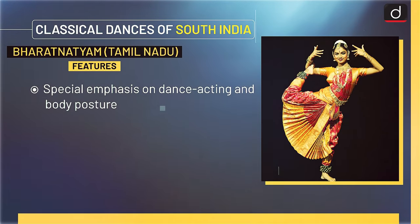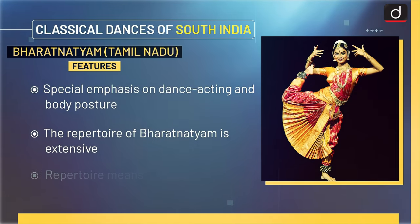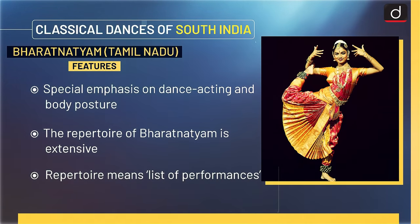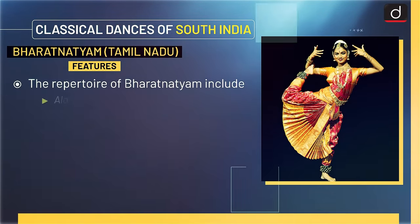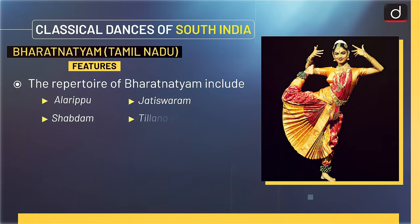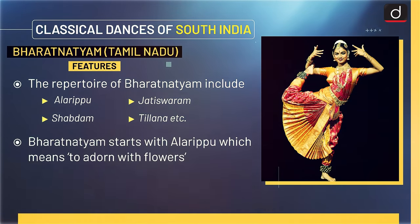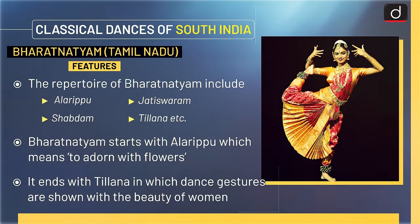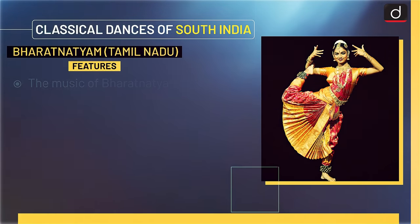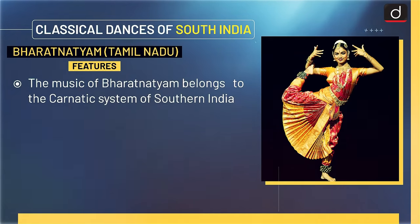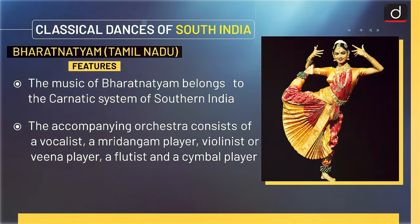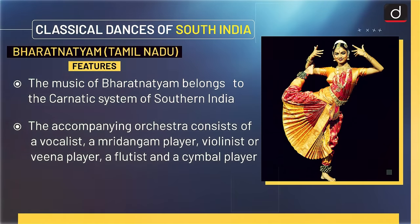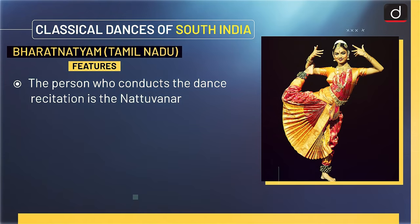Looking at the features of Bharatnatyam, special emphasis is on dance acting and body posture. The repertoire of Bharatnatyam is extensive, including Aleripu, Jati Swaram, Shabdam, Tillana, etc. Bharatnatyam starts with Aleripu, which means to adorn with flowers, and ends with Tillana, in which dance gestures are shown with the beauty of women. The music belongs to the Carnatic system of Southern India. The accompanying orchestra consists of a vocalist, Mridangam player, violinist or Veena player, a flutist and a cymbal player. The person who conducts the dance recitation is the Nattuvanar.